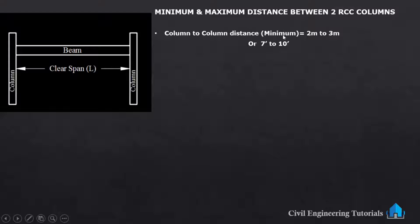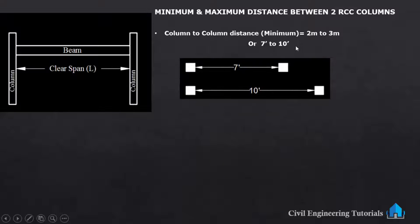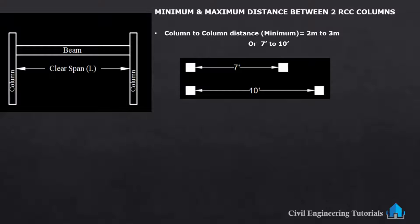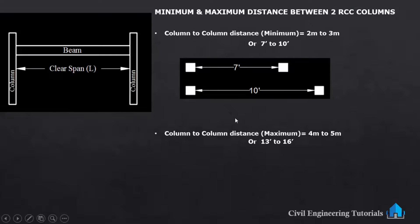The column-to-column minimum distance should be 2 meters to 3 meters, which is 7 feet to 10 feet. So this is one column and this is another column — the minimum column-to-column distance would be 7 feet to 10 feet. This applies if you are constructing up to a 3-storey or 4-storey building.